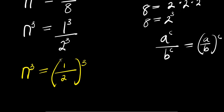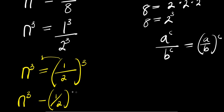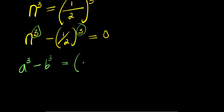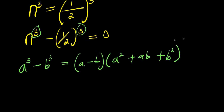So to solve this, I can move this over here: n cubed minus (1 over 2) cubed equals 0. Now we need to expand this. Consider the fact that a cubed minus b cubed equals (a minus b) times (a squared plus ab plus b squared). Here my a is n and b is 1 over 2.